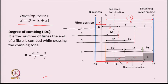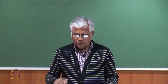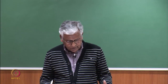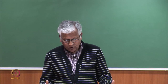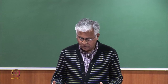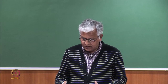Degree of combing therefore depends on two factors: the value of F and the value of S. If I reduce F — the feed length — the degree of combing is going to increase, meaning one particular fibre is going to be combed several times. S in a way also depends on how the machine has been designed.